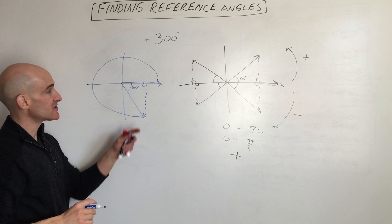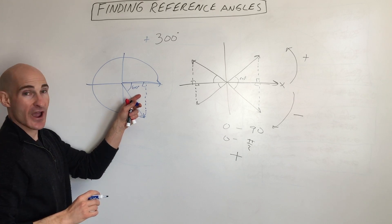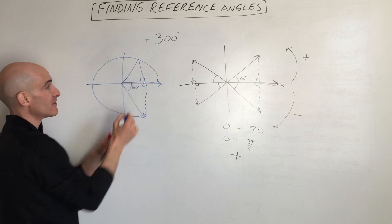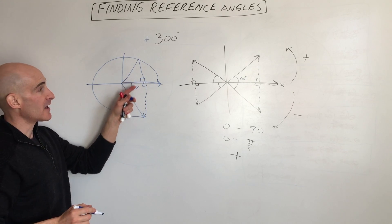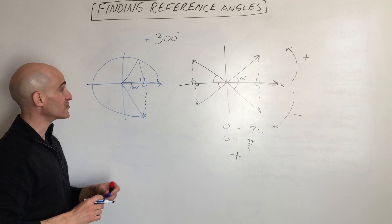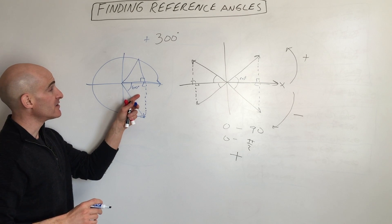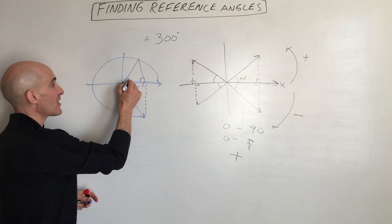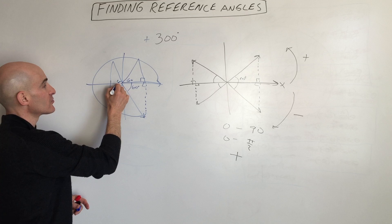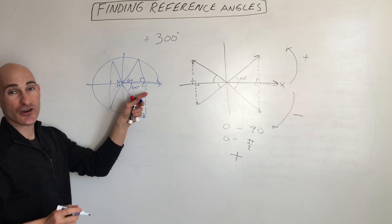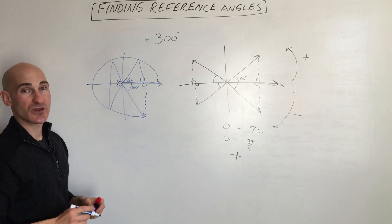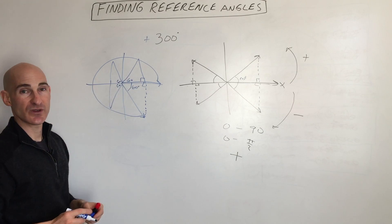The nice thing about reference angles is that this triangle is the same as this triangle. If they all have a 60-degree reference angle — in quadrant one, two, three, and four — all these triangles are congruent, which means the sides of the triangles are going to be congruent as well. This has applicability when you start studying the unit circle.